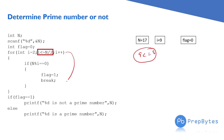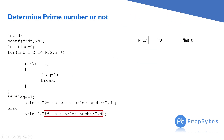Now 9 is not ≤ 8, so the loop exits. The loop variable i ran for values 2 through 8 — previously it ran from 2 through 16. We effectively reduced the iterations to half. Flag remains 0, so 17 is prime. Previously we ran 16 times; now we ran 8 times — same correct answer.